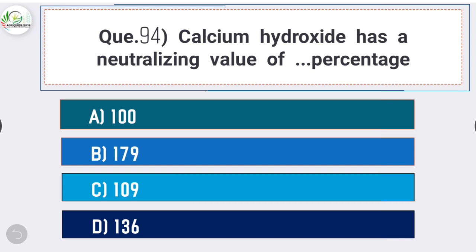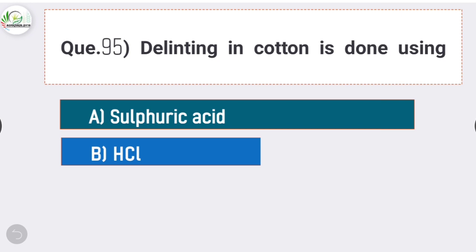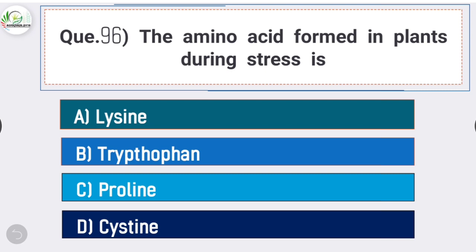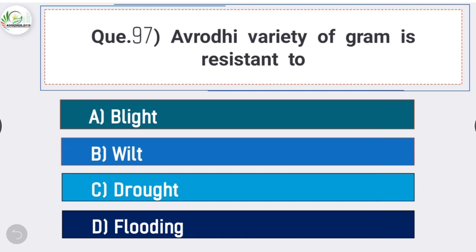Question number ninety-four: calcium hydroxide has a neutralizing value of - answer is option D - 136%. Question number ninety-five: delinting in cotton is done using - answer is option A - sulfuric acid. Delinting in cotton is done using sulfuric acid. Question number ninety-six: the amino acid formed in plants during stress is - answer is option C - proline. Question number ninety-seven: Avrodhi variety of gram is resistant to - answer is option B - wilt.